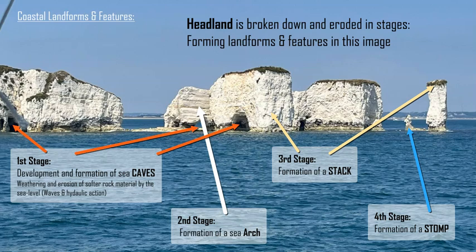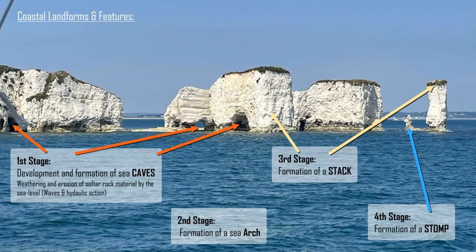That stump will continue to erode and weather over time and eventually become small enough to go under the surface of the ocean and disappear from sight. So this image shows a sequential, step-by-step timeline of what happens to a coastline when exposed to water and weathering and erosion agents over time — especially evident in softer rock coastlines like we have here in Dorset, England.